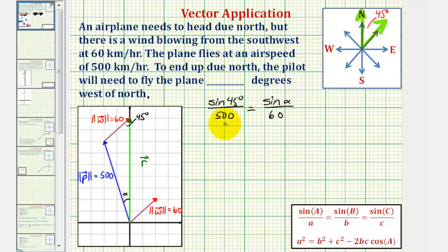Now we'll cross multiply, solve for sine alpha, then determine alpha. So sine alpha times 500 must equal 60 times sine 45. So again, 500 sine alpha must equal 60 sine 45 degrees.